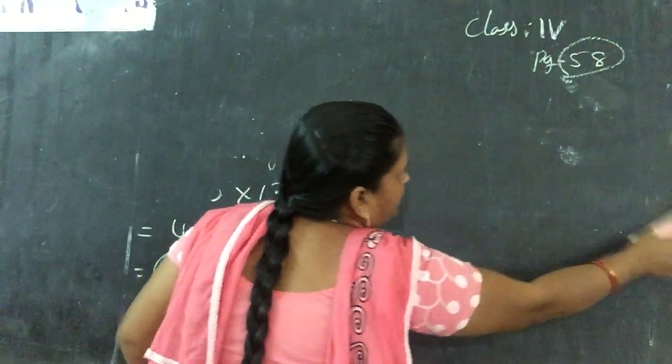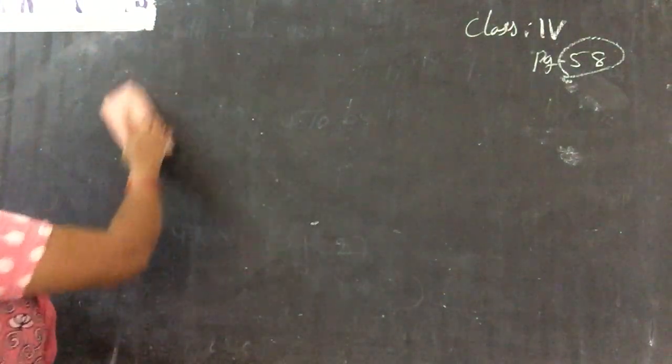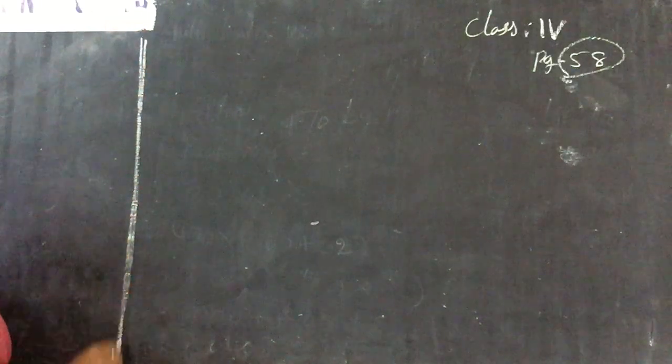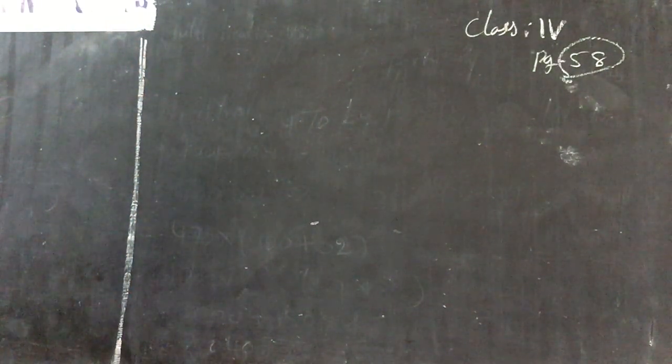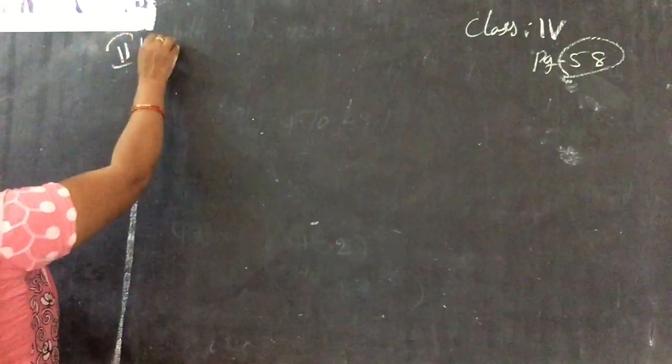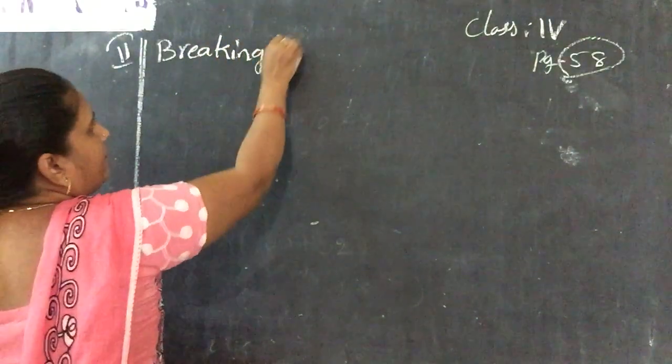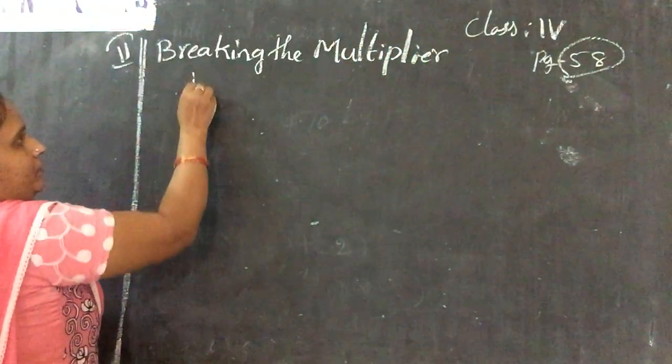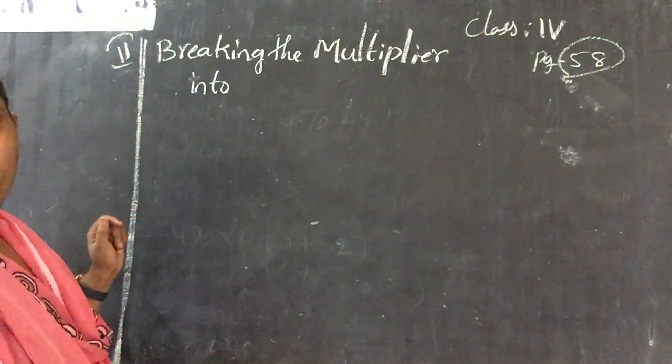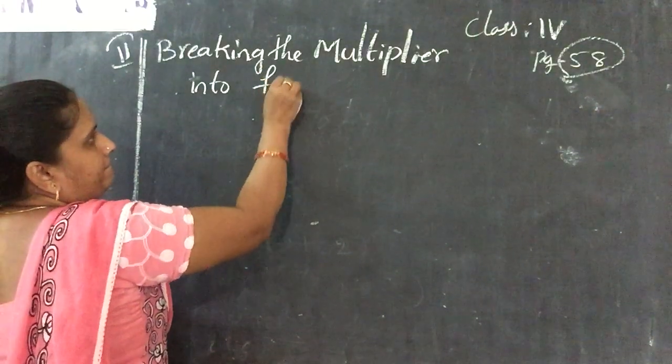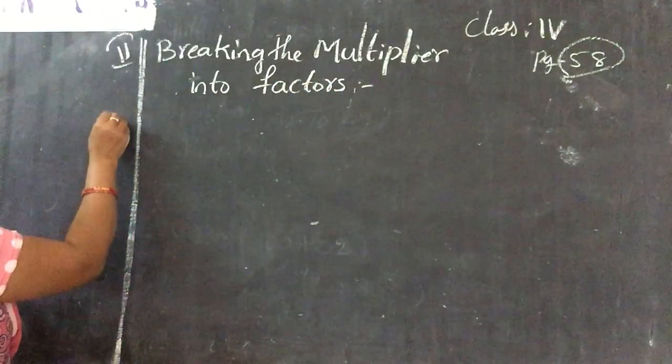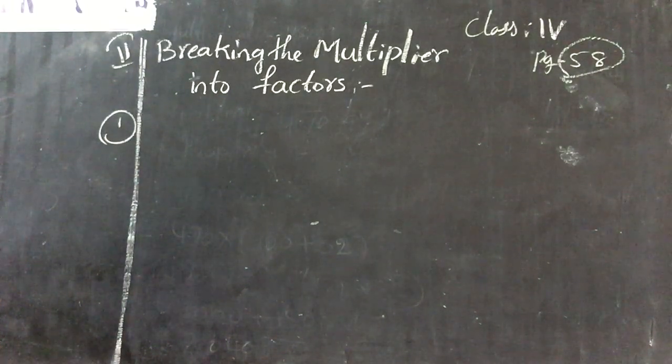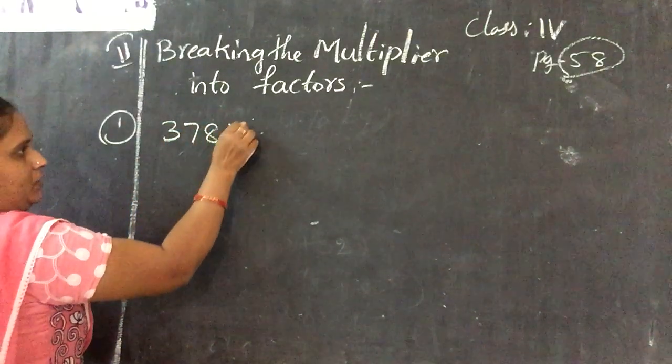Second method, breaking the multiplier into factors. First one, 378 into 30.